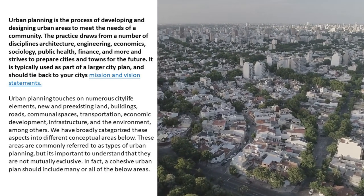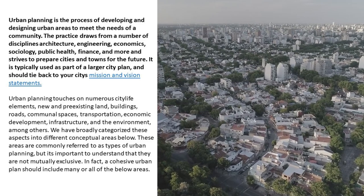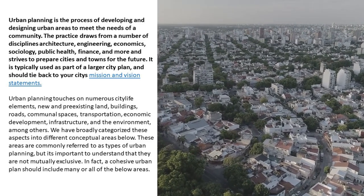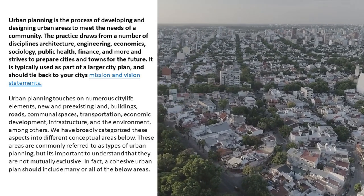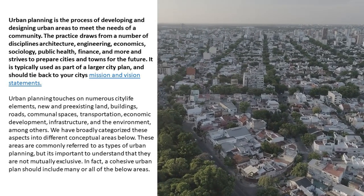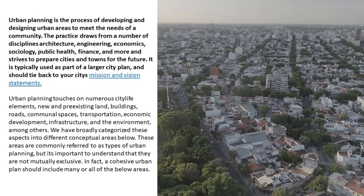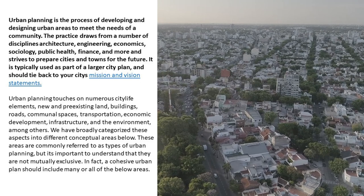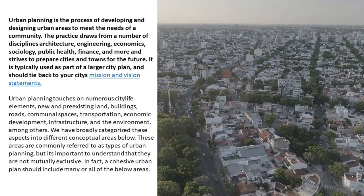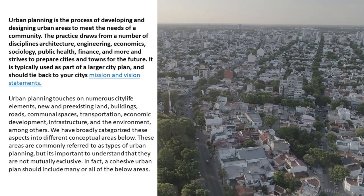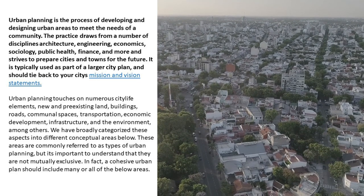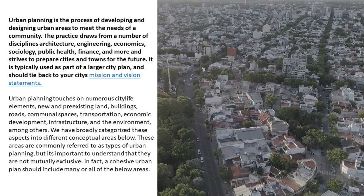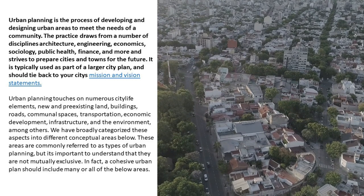Urban planning touches on numerous city life elements: new and pre-existing land, buildings, roads, communal spaces, transportation, economic development, infrastructure, and the environment, among others. We have broadly categorized these aspects into different conceptual areas. These areas are commonly referred to as types of urban planning, but it's important to understand that they are not mutually exclusive. In fact, a cohesive urban plan should include many or all of the below areas.